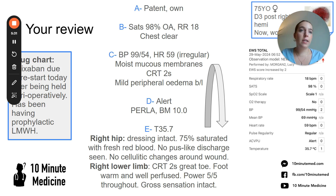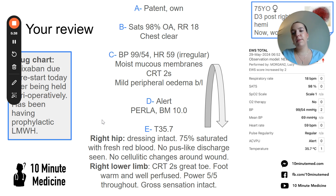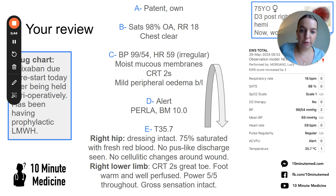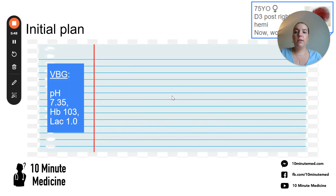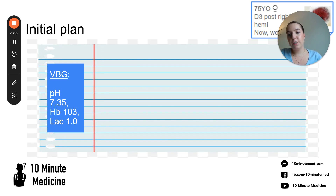Looking at her drug chart, her apixaban was due to restart today but had been held perioperatively, and she has been having low molecular weight heparin at a prophylactic dose post-operatively. At this point you could do a VBG to reassure yourself, depending on how worried you are. Her lactate is 1, which is very reassuring, and she has a normal pH and a normal or slightly low HB.